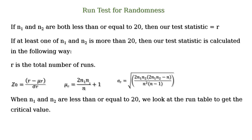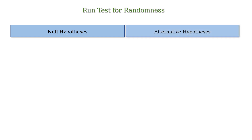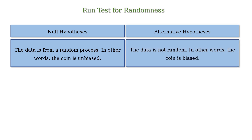When n1 and n2 are less than or equal to 20, we look at the run table to get the critical value. If at least one of n1 and n2 is more than 20, we look at the z-table to get the critical value and compare the critical value with the test statistic to determine whether the null hypothesis should be accepted.